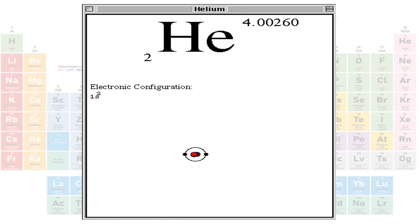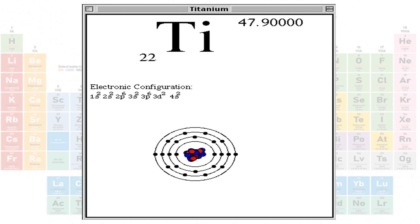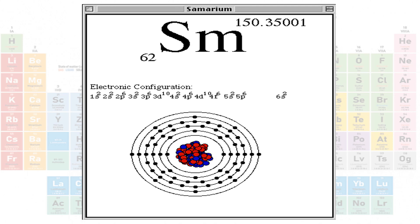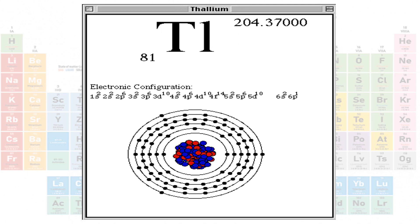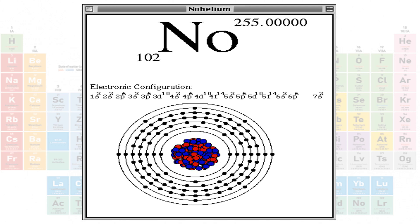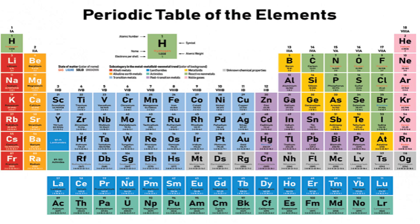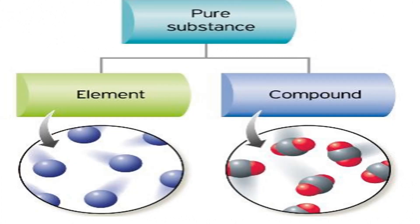Here are the atomic structures of different elements depending on their subatomic particles — the proton, neutron, and electron. In the periodic table of elements, elements are grouped according to their properties or organized according to their atomic number. Elements may exist as a single atom or as a molecule.